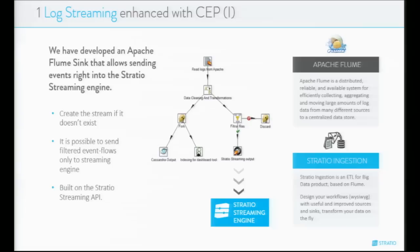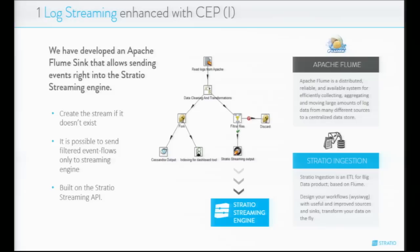We have also developed an Apache Flume sink that allows sending events directly into the Stratio Streaming engine. This sink will create the stream automatically if it doesn't exist, and it's possible to send filtered event flows to the streaming engine. It is built with the Stratio Streaming API. Apache Flume is a distributed, reliable, and available system for efficiently collecting, aggregating, and moving large amounts of log data from many different sources to a centralized data store. We also have our own solution built on Apache Flume called Stratio Ingestion, so with this sink you can use log streaming enhanced with CEP.